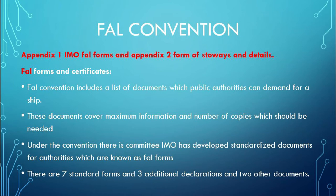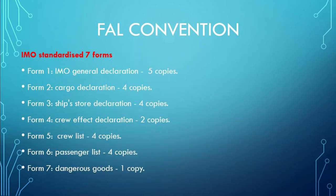FAL forms and certificates: the FAL Convention includes a list of documents which public authorities can demand from a ship. These documents cover the maximum information and number of copies required. Under the convention, IMO has developed standardized documents for authorities known as FAL forms. There are 7 standard forms, 3 additional declarations, and 2 other documents.